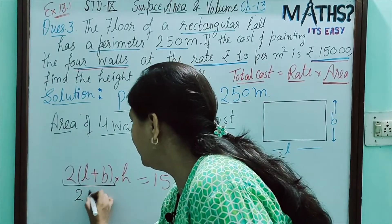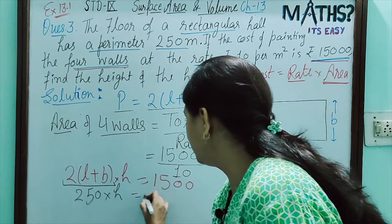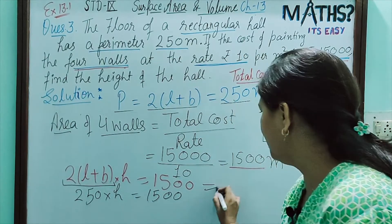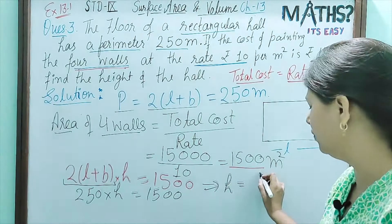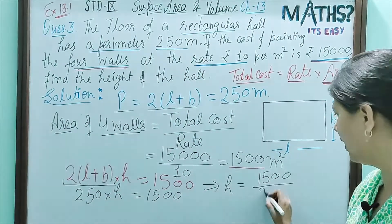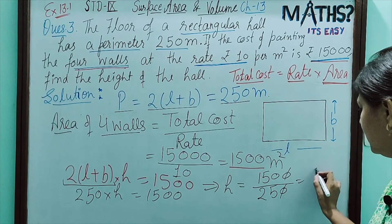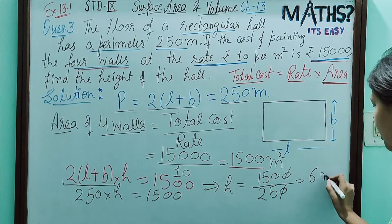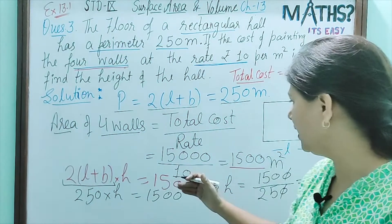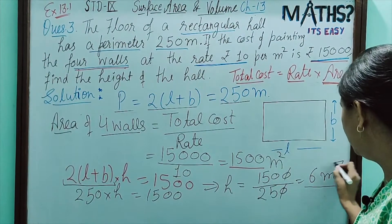So it will be 250 × H = 1,500. By this, we can get value of H = 1,500 ÷ 250 = 6 metres. So in this way, we can calculate the height of the hall, which is 6 metres.